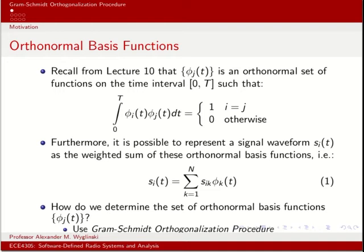The second important property is that we can use the set of orthonormal basis functions to represent any signal waveform by a weighted summation of these basis functions, where those weights form the coordinates in the vector space. Now, the big question is: suppose you are given a set of signal waveforms S_i of t but not the orthonormal basis functions — it is left to you to derive them. Well, there is a procedure called Gram-Schmidt orthogonalization that will enable you to create your own orthonormal basis functions.